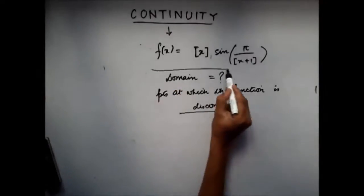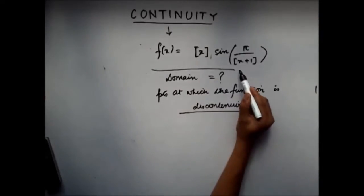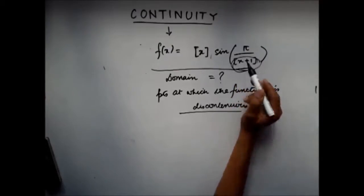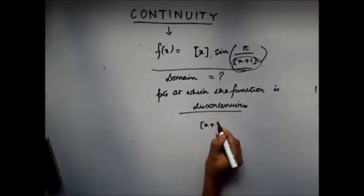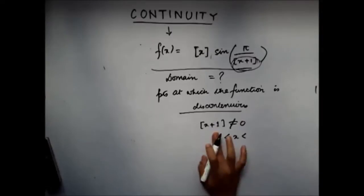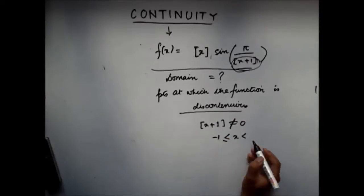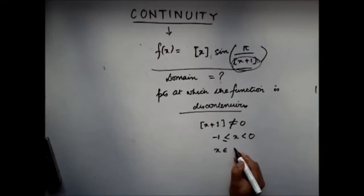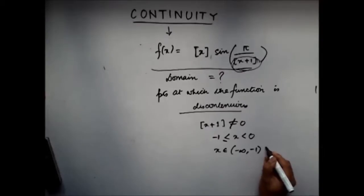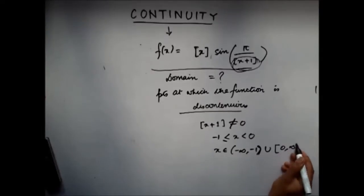You can see that this function is defined at all values except at values for which the denominator becomes zero, because if the denominator becomes zero, this is an undefined expression. So what I should have is that the denominator shouldn't be equal to zero. That means x shouldn't lie between minus one and zero. So my domain will be x belonging to minus infinity to minus one — it can't take minus one because then it's zero — and then from zero onwards. So this is my domain.